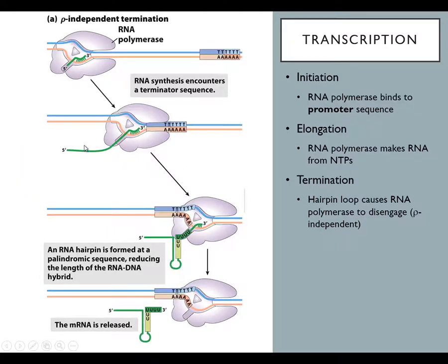Termination of transcription is just the end of transcription — it's when the RNA polymerase reaches the end of the gene and stops. With DNA replication, the polymerase stops when it copies the entire chromosome. With transcription, you don't want to make a transcript of the entire chromosome — you only want to transcribe the gene. So there has to be some sort of DNA sequence signal that tells RNA polymerase it's reached the end of the gene and to let go.